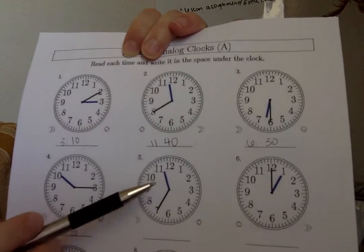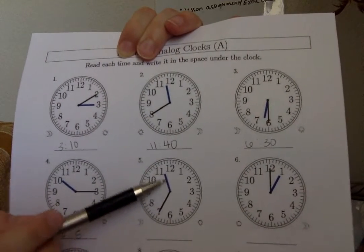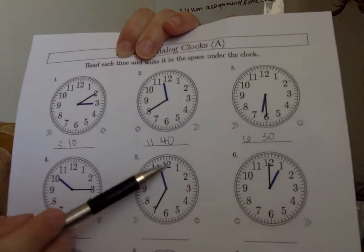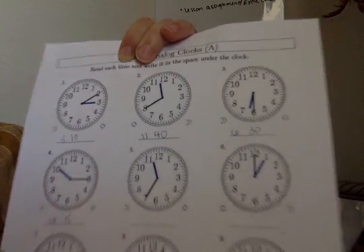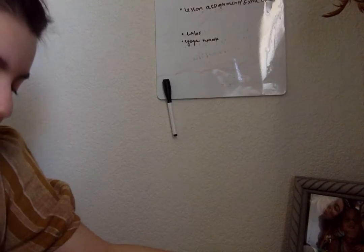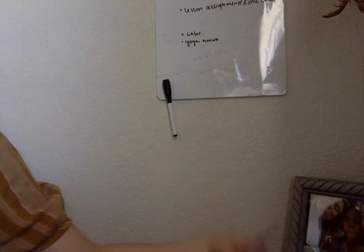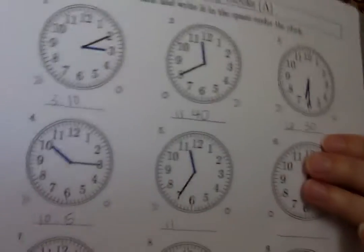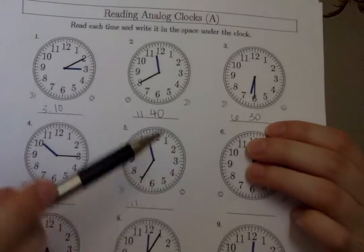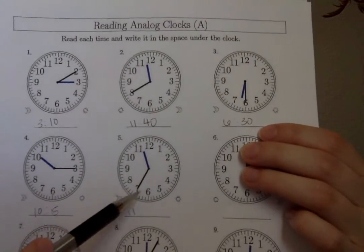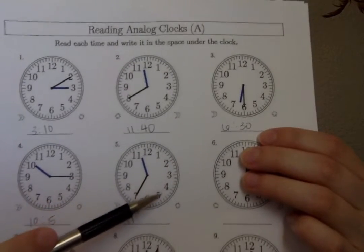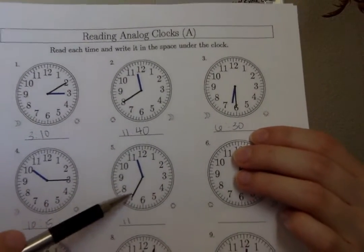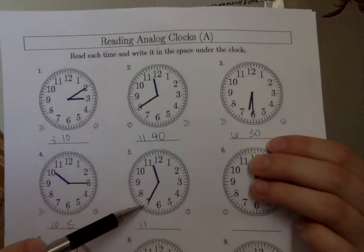Now we're gonna go to the next. We're gonna look for the short hand, and it's between eleven and twelve but it's not quite on that twelve yet, so we're gonna assume it's eleven. We'll write eleven for the hour. Then we're gonna look for that long hand to represent the minutes — it's on seven. So we count: five, ten, fifteen, twenty, twenty-five, thirty, thirty-five. Our minutes are gonna be thirty-five. So we have 11:35.